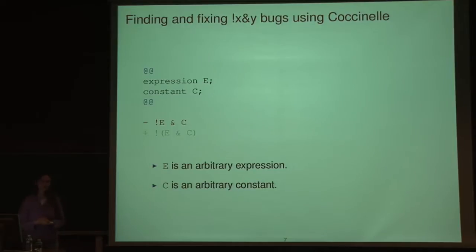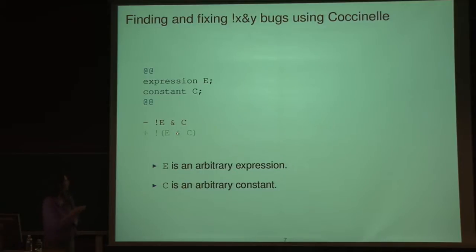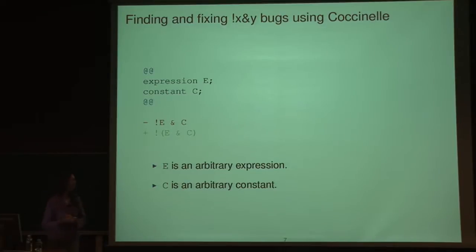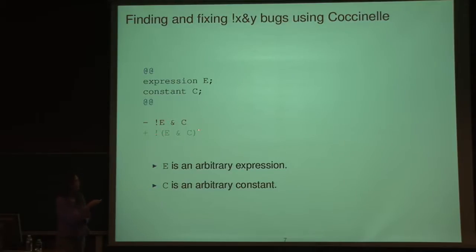Here's an example of how we find and fix that bug. We have a Boolean negation operator and a bitwise AND operation. The argument of the Boolean negation operator can be any arbitrary expression, so we say E is a metavariable that can match any expression. Looking around the kernel, this problem often occurs when the other argument of the bitwise AND is a constant. We specify that, because if you had two arbitrary expressions you might actually want to AND two Boolean operations. Basically we say we have this pattern and we'd like to replace it with the same code but with parentheses before and after. Our tool takes this pattern, searches through your entire code base — Linux or any other C code — and finds and modifies every occurrence.